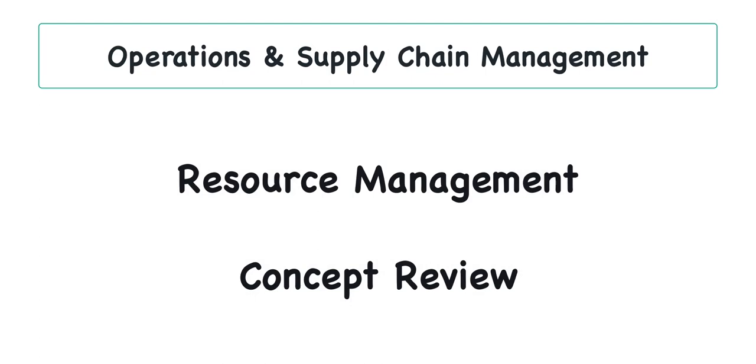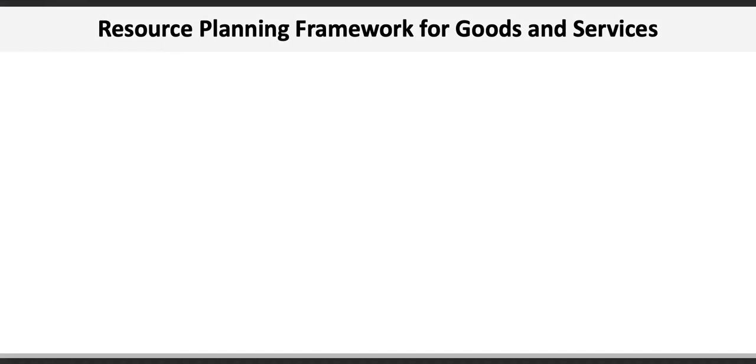This video provides an overview of the major concepts included in Chapter 14 Resource Management. Resources used in the manufacture of products or the provision of services can include materials, equipment, facilities, information, technical knowledge and skills, and of course people. All these resources have to be effectively managed to optimize productivity and profitability.